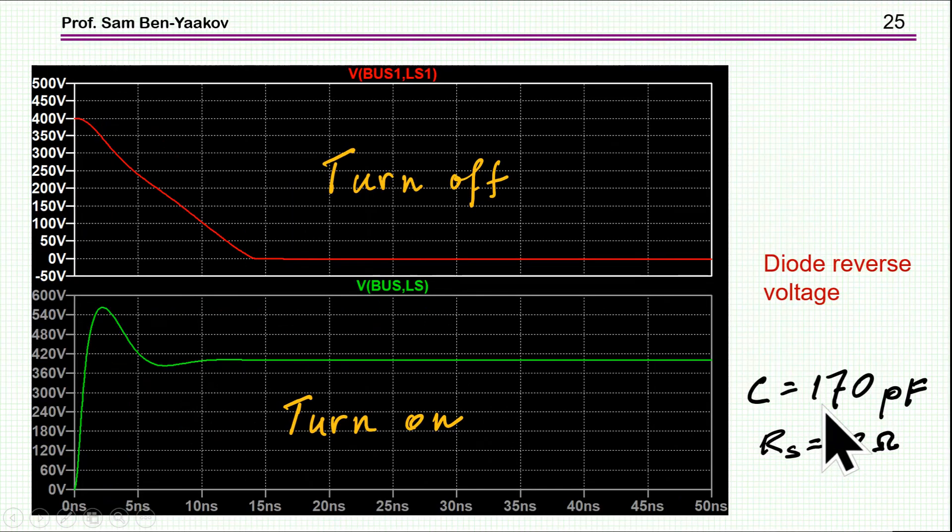If I choose 170, and RS 10, situation looks pretty good. We have the 150 volt overshoot, which is as we expect, or as we require. Turn off looks pretty good. So this is a nice picture here.